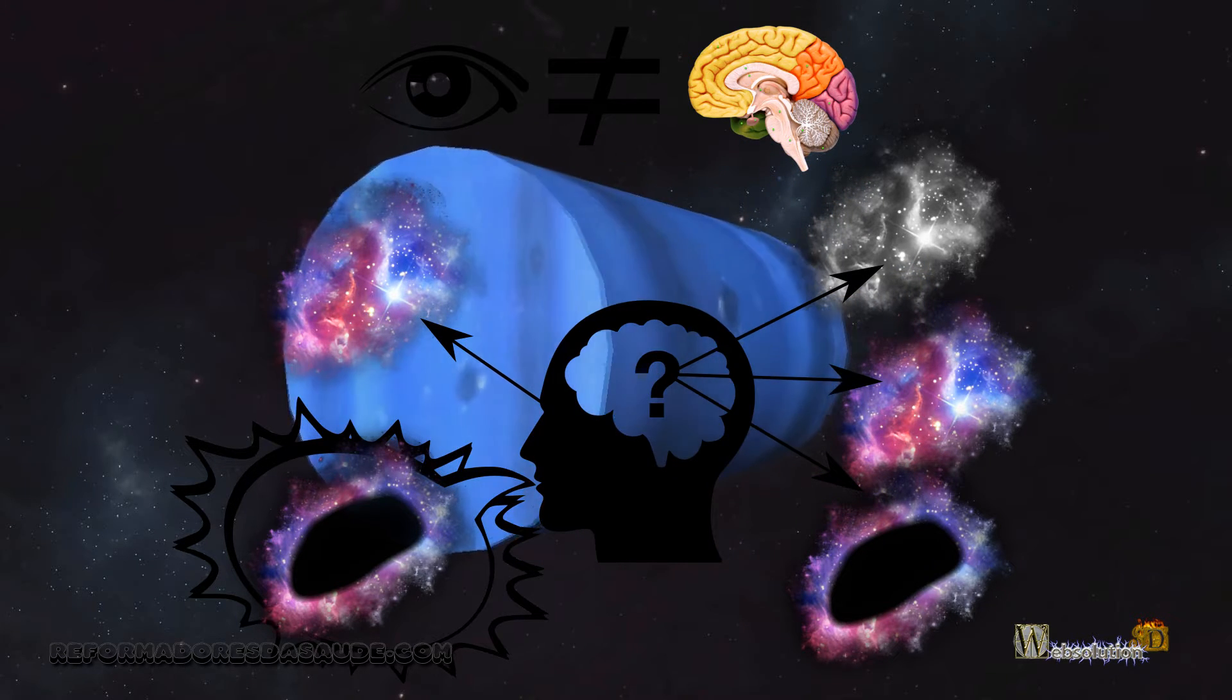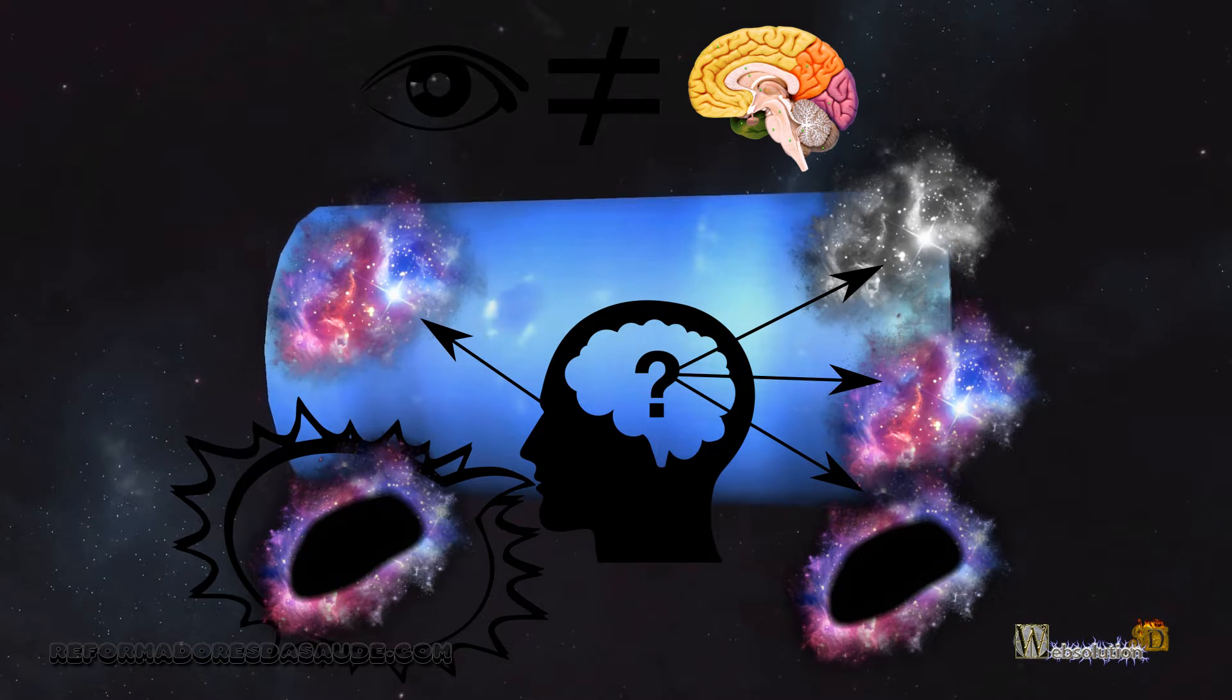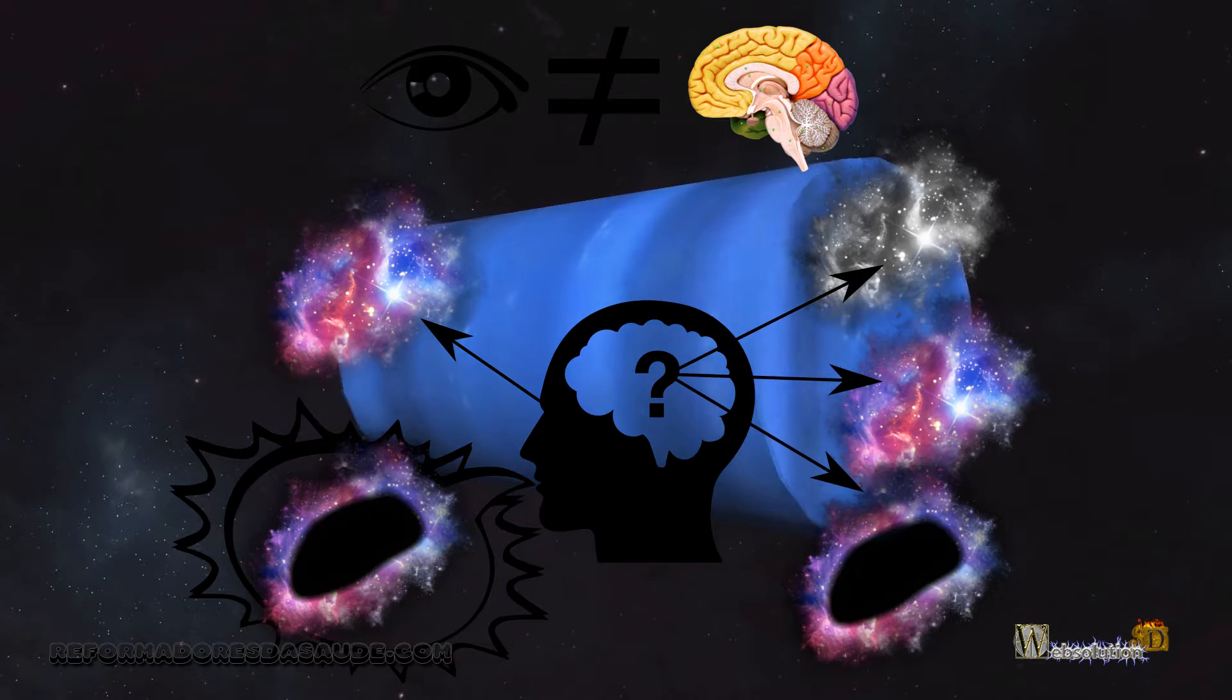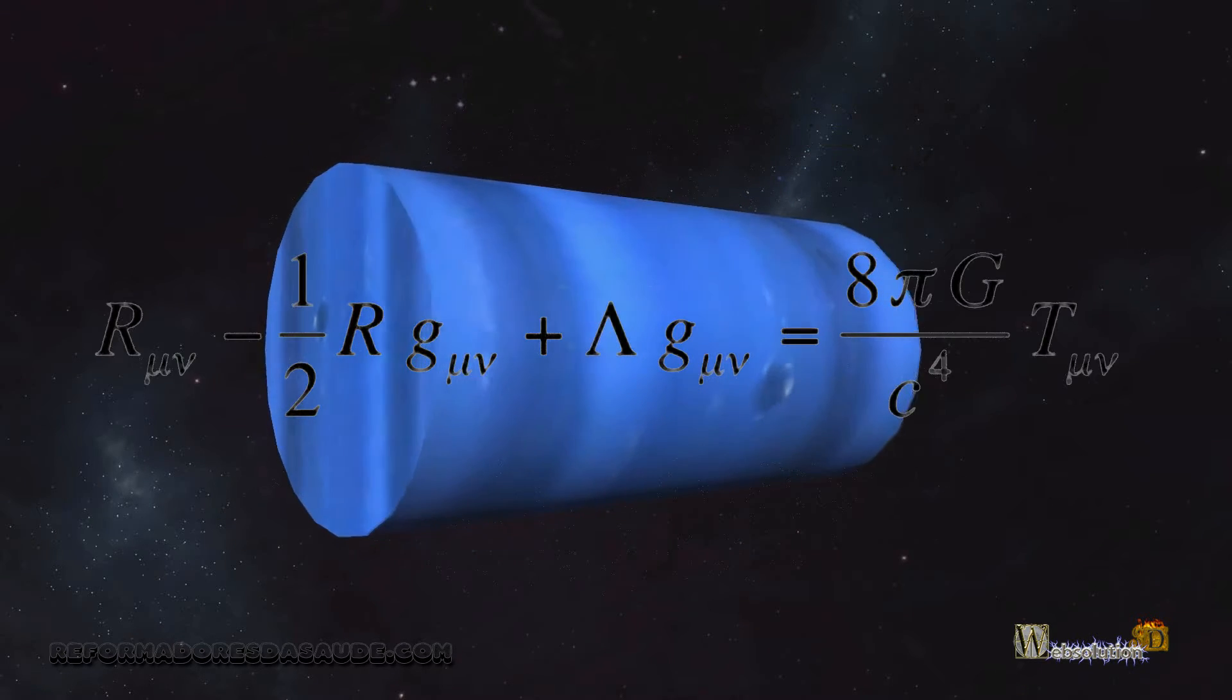Thus, a relative truth is a greater lie than a relative truth closer to absolute truth. Thus, Newton's law is more a lie than Einstein's universal gravitation.